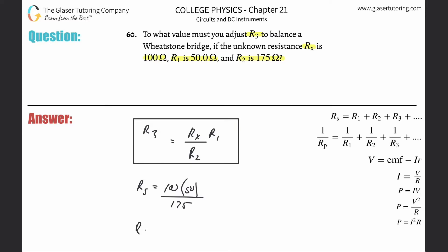And then we're going to find our R sub three here is going to equal 100 times 50 divided by 175, 28.6 or so. So 28.6 ohms.